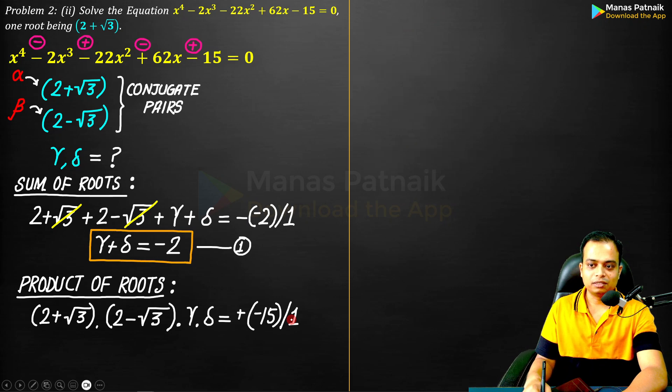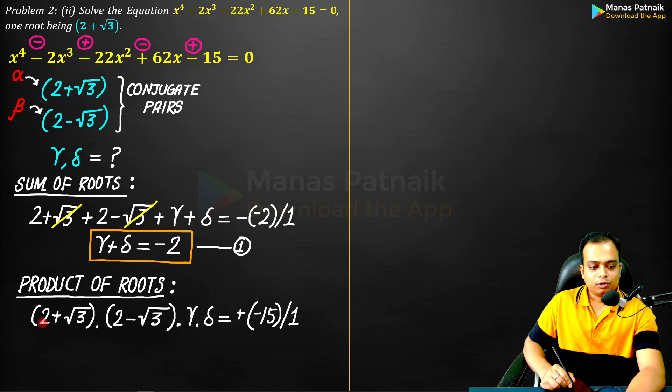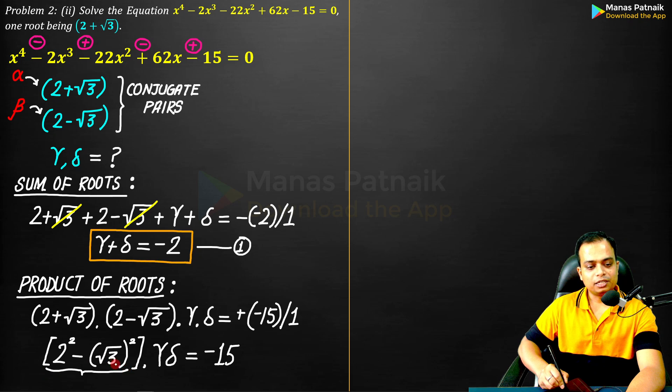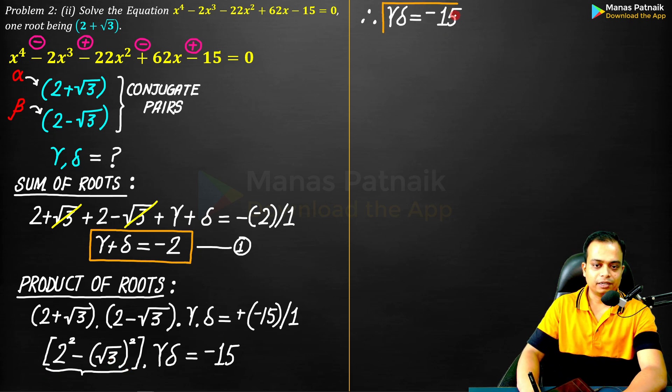Let me erase all of these things. This would become 2² - (√3)². And then this is going to be... if you watch carefully, this is 4 - 3. 4 - 3 is 1. γδ = -15. We have our second equation.